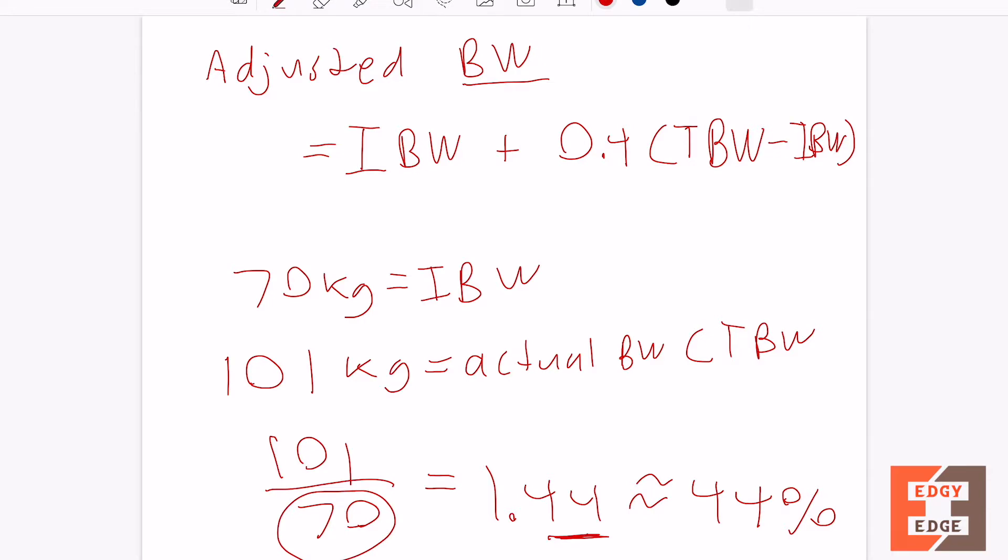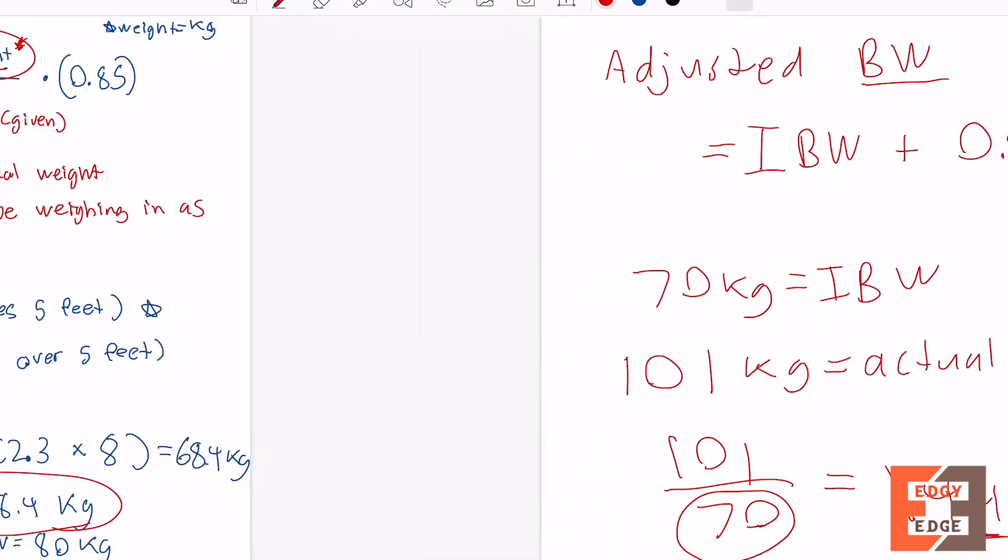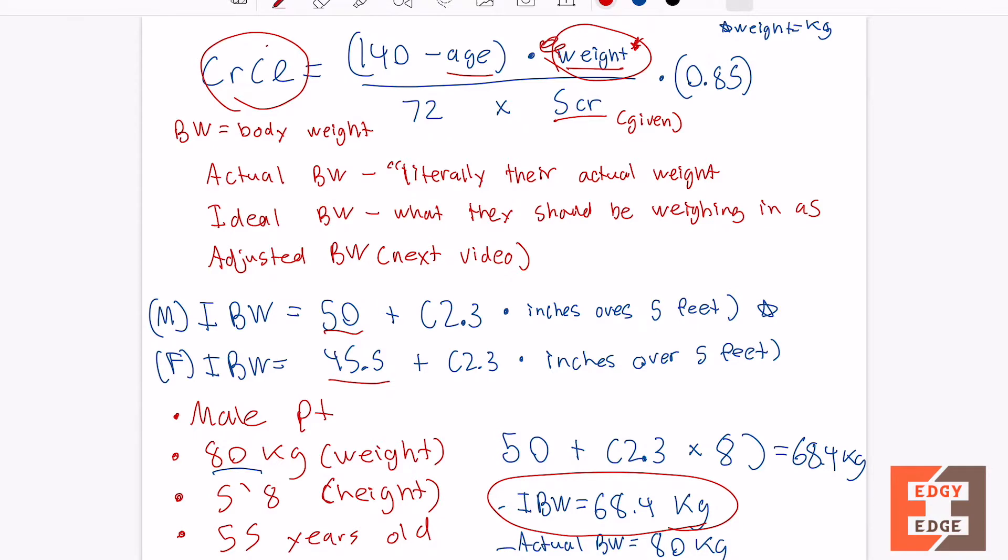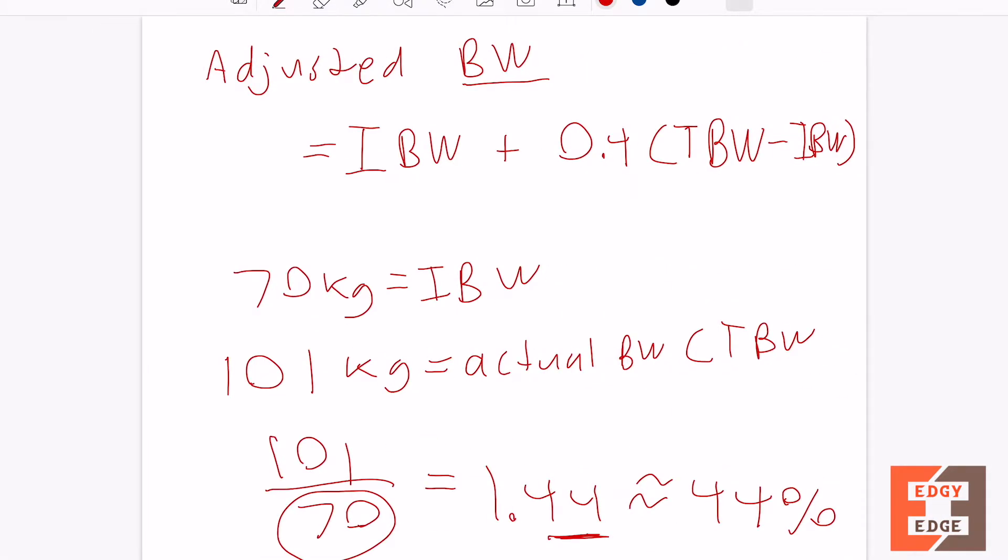So this is not an accurate number. If you use 70 in the creatinine clearance formula, if you use 70 right here, it won't be accurate. You won't get an accurate measure of their creatinine clearance.